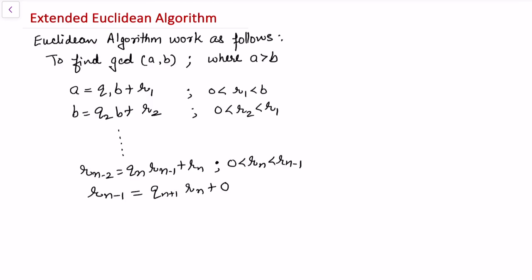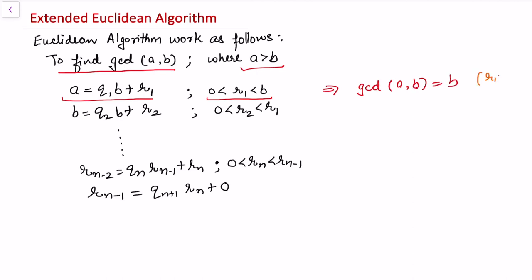In this video we'll be talking about the extended Euclidean algorithm. First, let me recall the Euclidean algorithm. It works as follows: we need to find the GCD of two integers a and b, where a is strictly greater than b. We divide a by b, and if the first remainder r1 is equal to zero, then the GCD of a and b is equal to b.